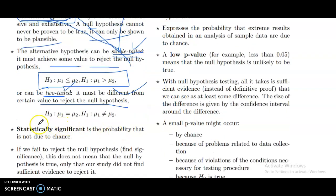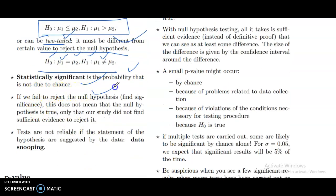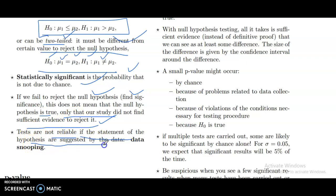Statistical significance is the probability that a result is not due to chance. If we fail to reject the null hypothesis and find no significance, this does not mean the null hypothesis is true — only that our study did not find sufficient evidence to reject it. Tests are not reliable if the statement of the hypothesis is projected by the data.